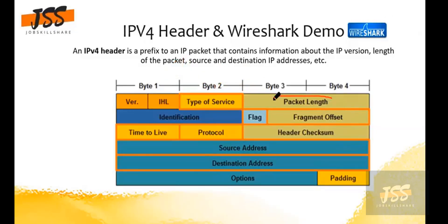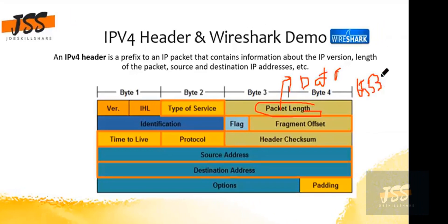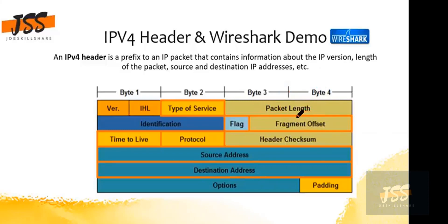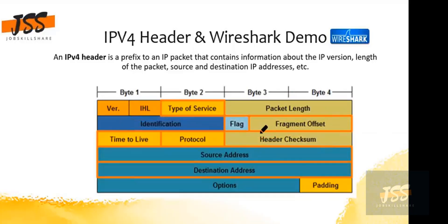Then we have the packet length — this is basically the data. The size for the packet length field is 65,536. Then we have identification, flag, and fragment offset — I'll discuss these later on once I finish the other fields, because those are actually much easier.